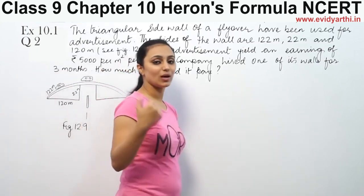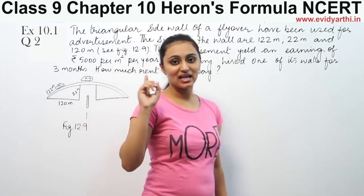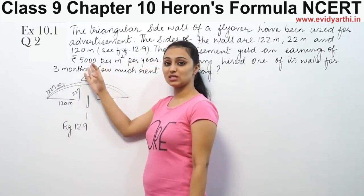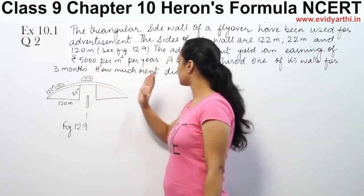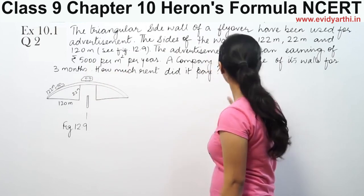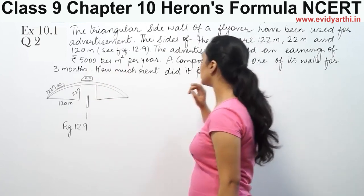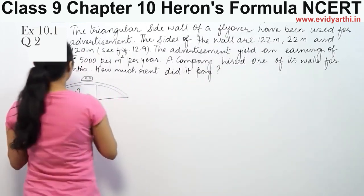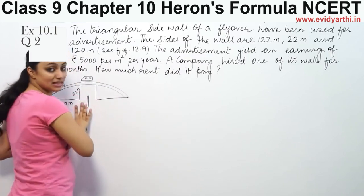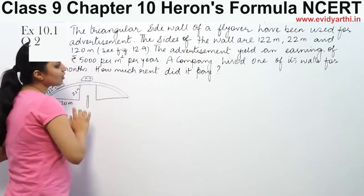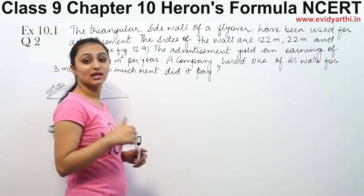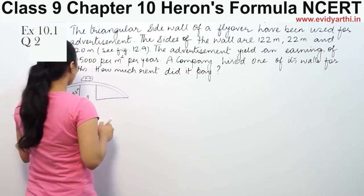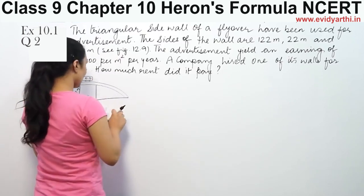From there, each meter square earns 5,000 rupees. A company hired one of its walls for 3 months. So how much rent did it pay?